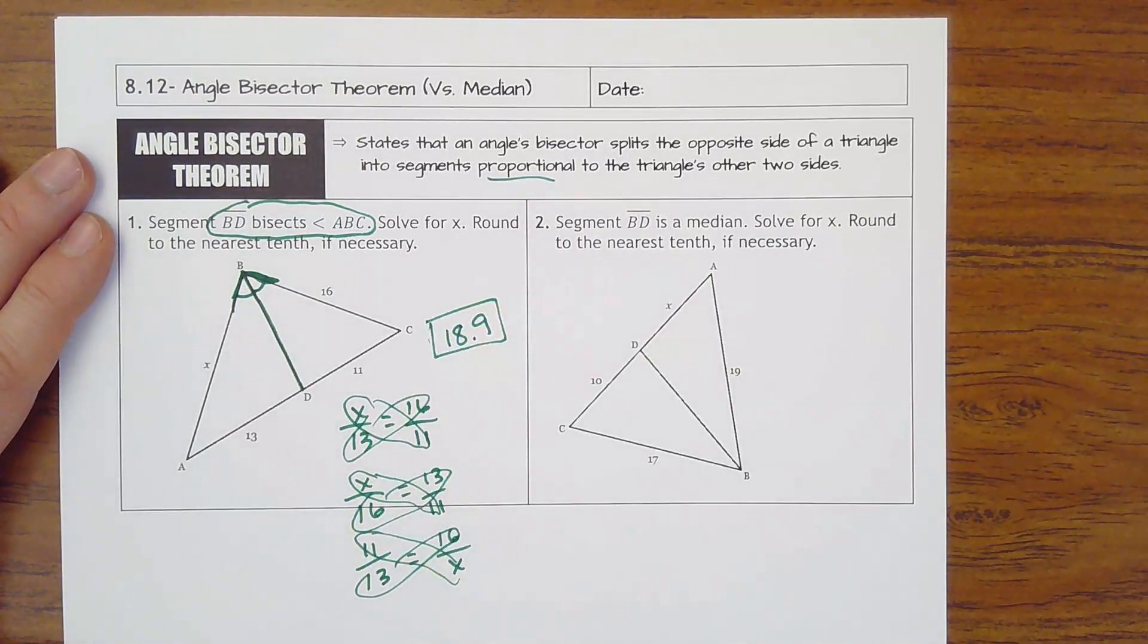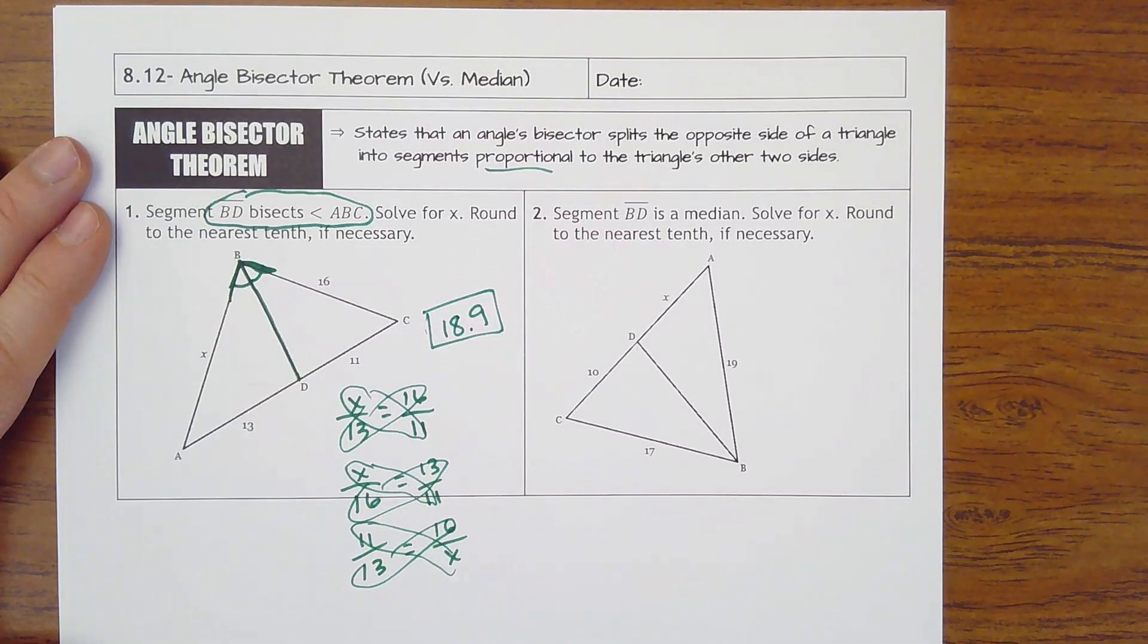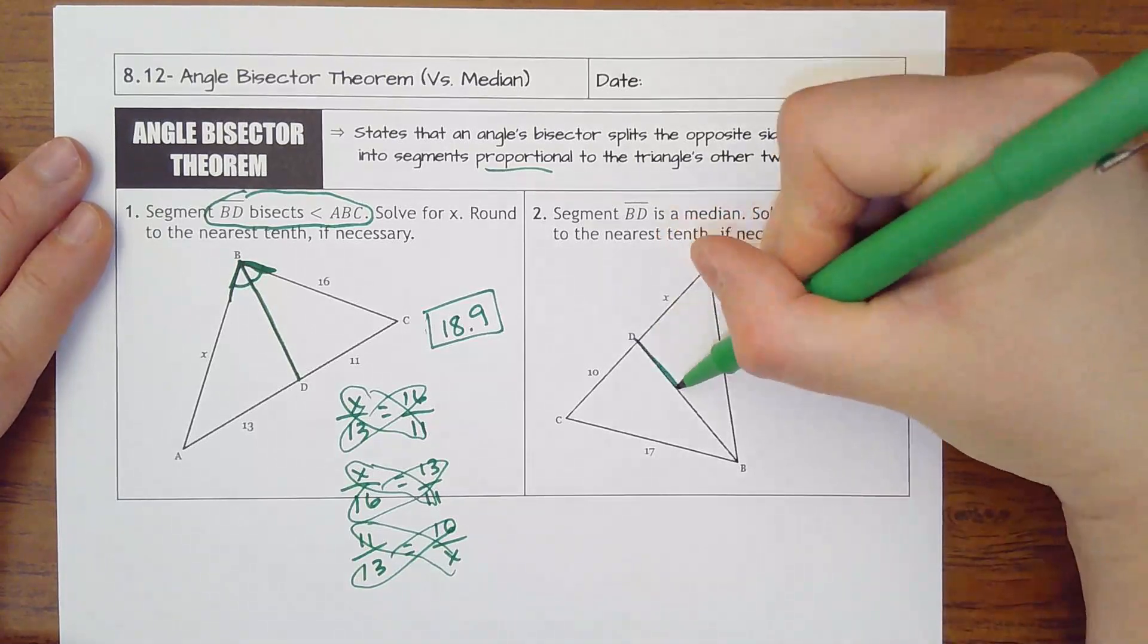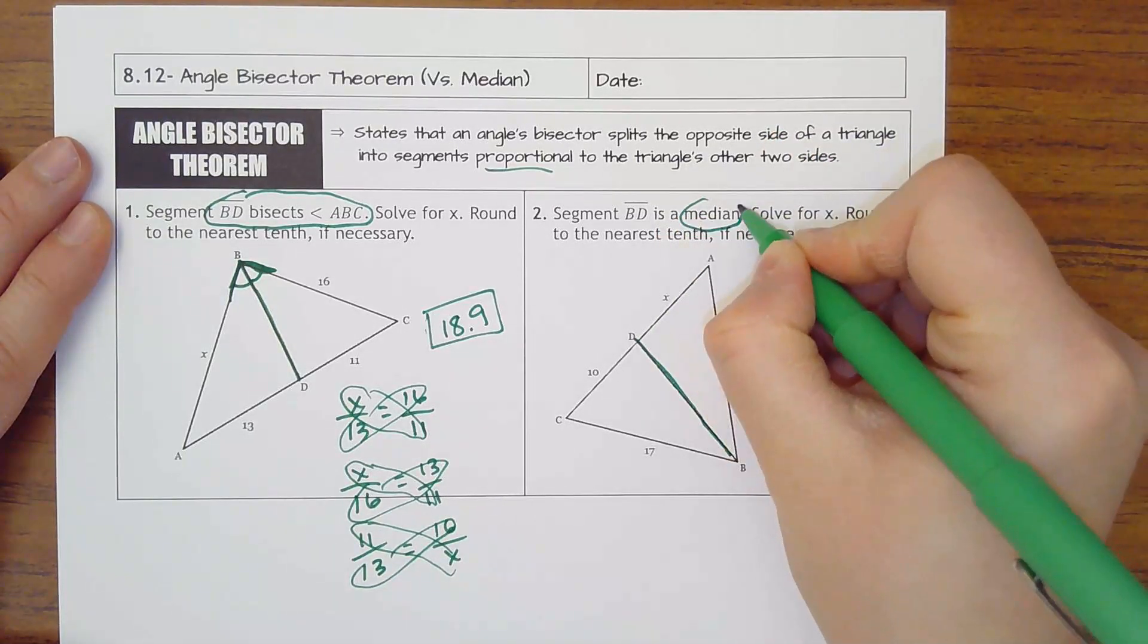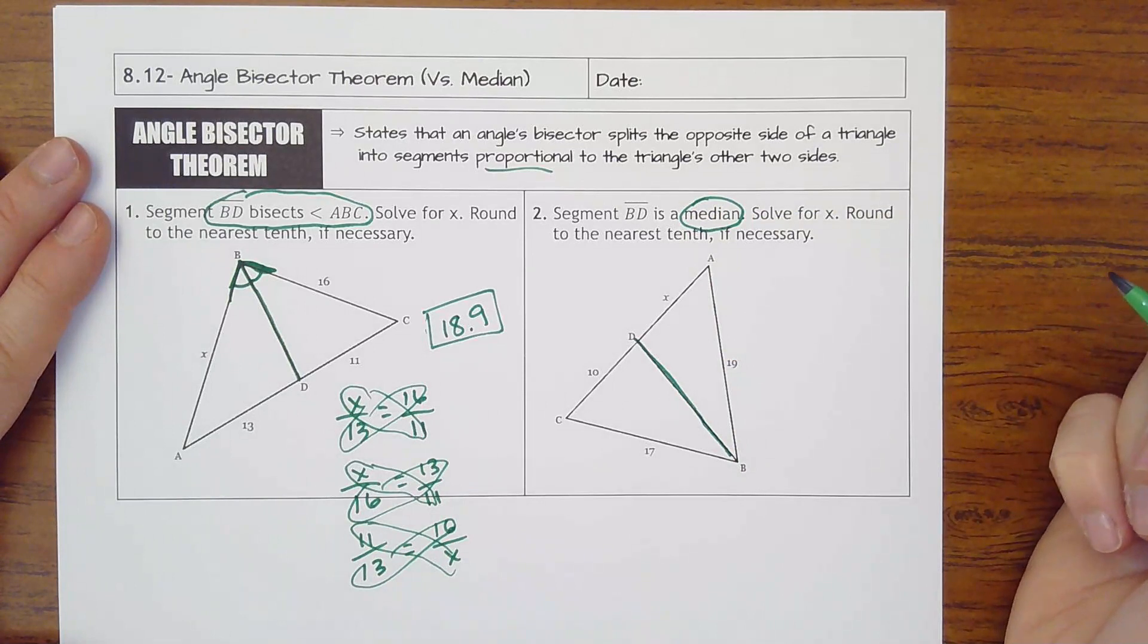Easy enough. Now look at number two. Do not stop watching. Number two is actually even simpler if you catch it. It says segment BD is a median, does not say angle bisector. A median.